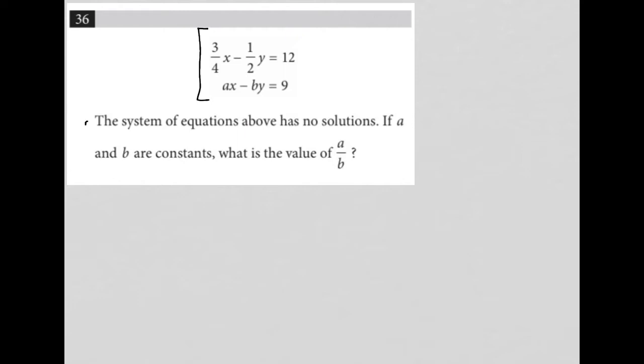The question says the system of equations above has no solution. This is very important. What does it mean for a system to have no solutions? This is the part to really pay attention to: it means that both x and y cancel out simultaneously.